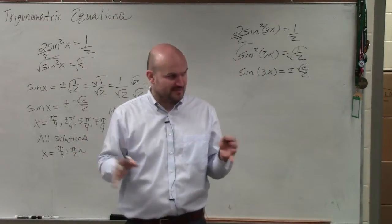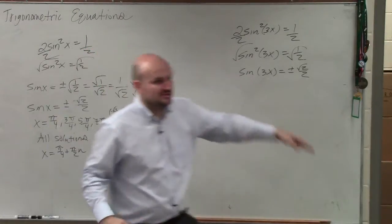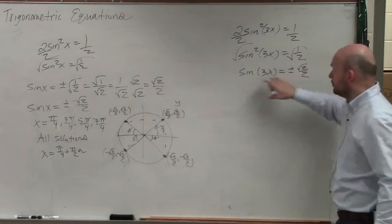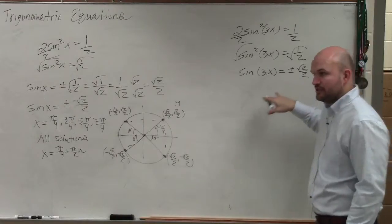We're not changing anything. Does that make sense? Keep that the same. You're still going to find all the solutions. Go to your unit circle. When is the sine equal to plus or minus square root of 2 over 2?